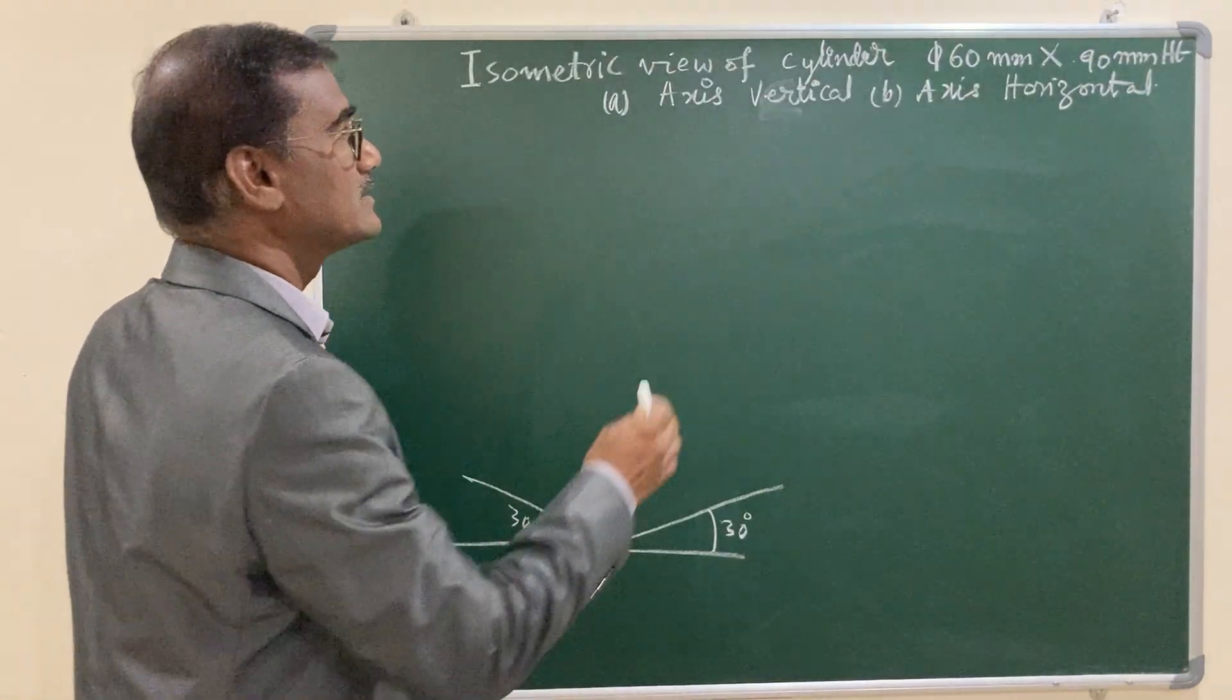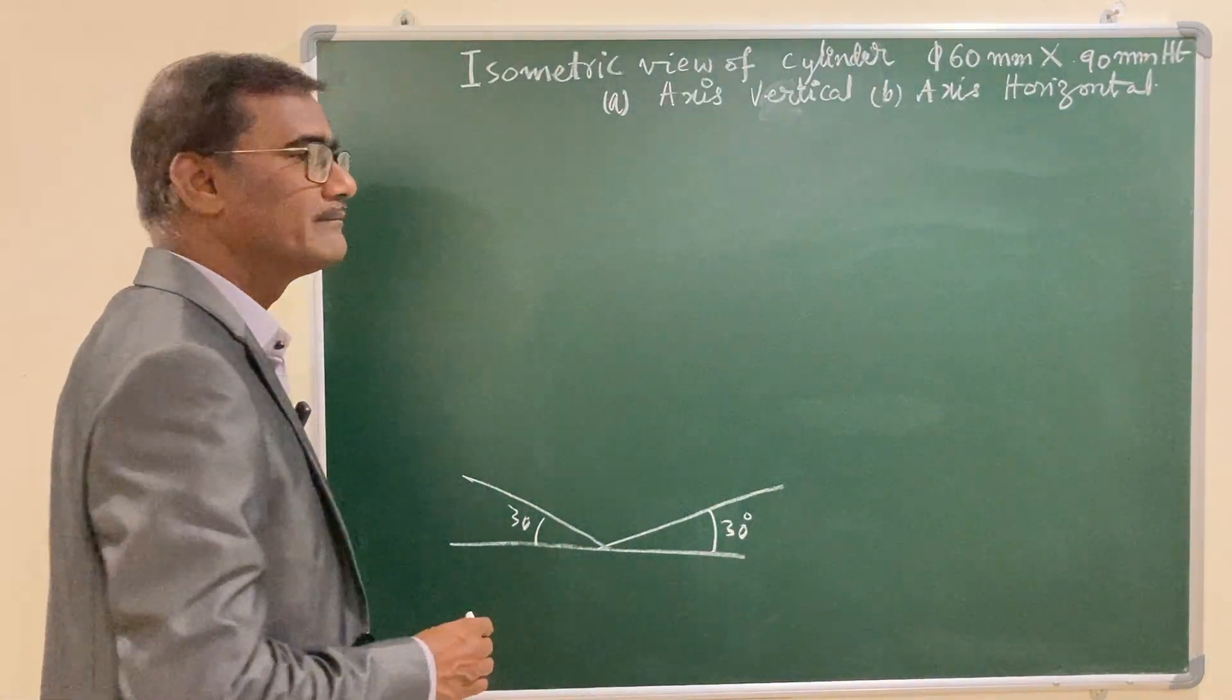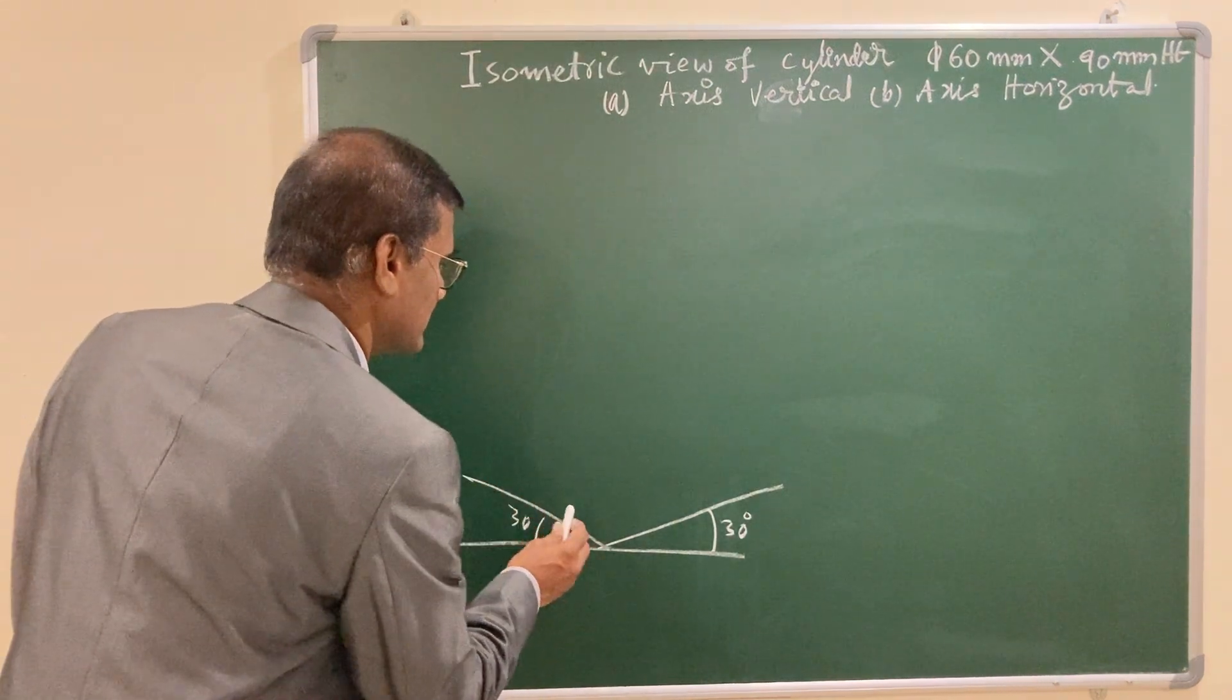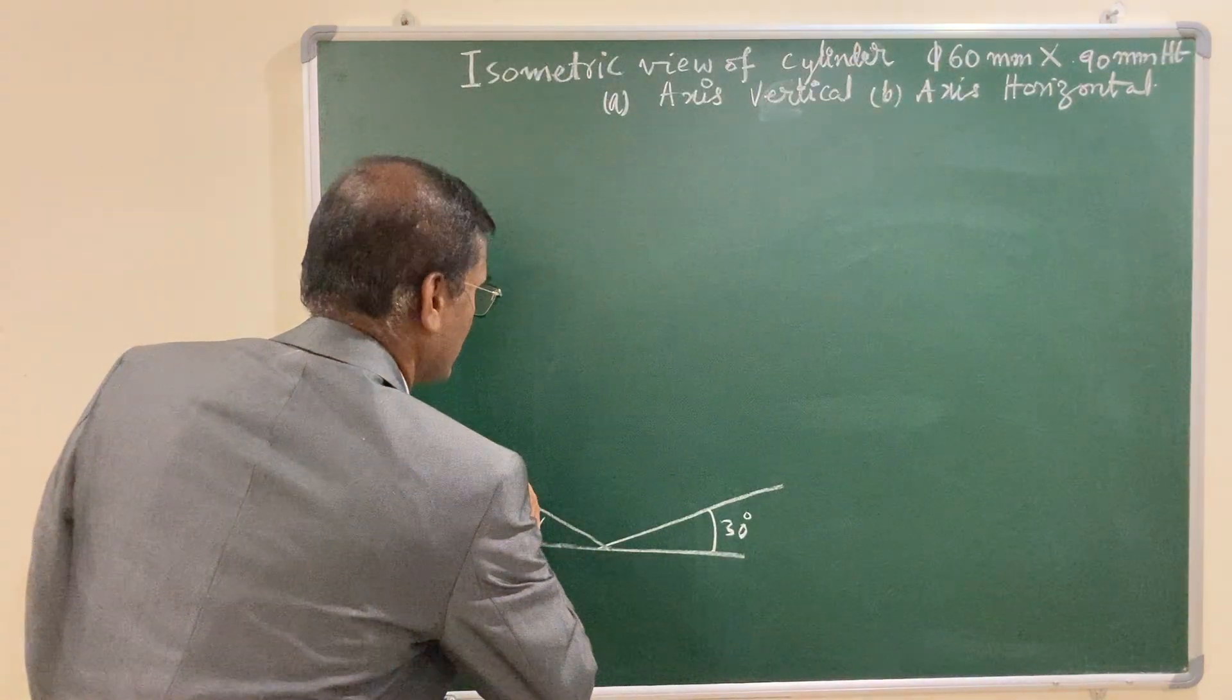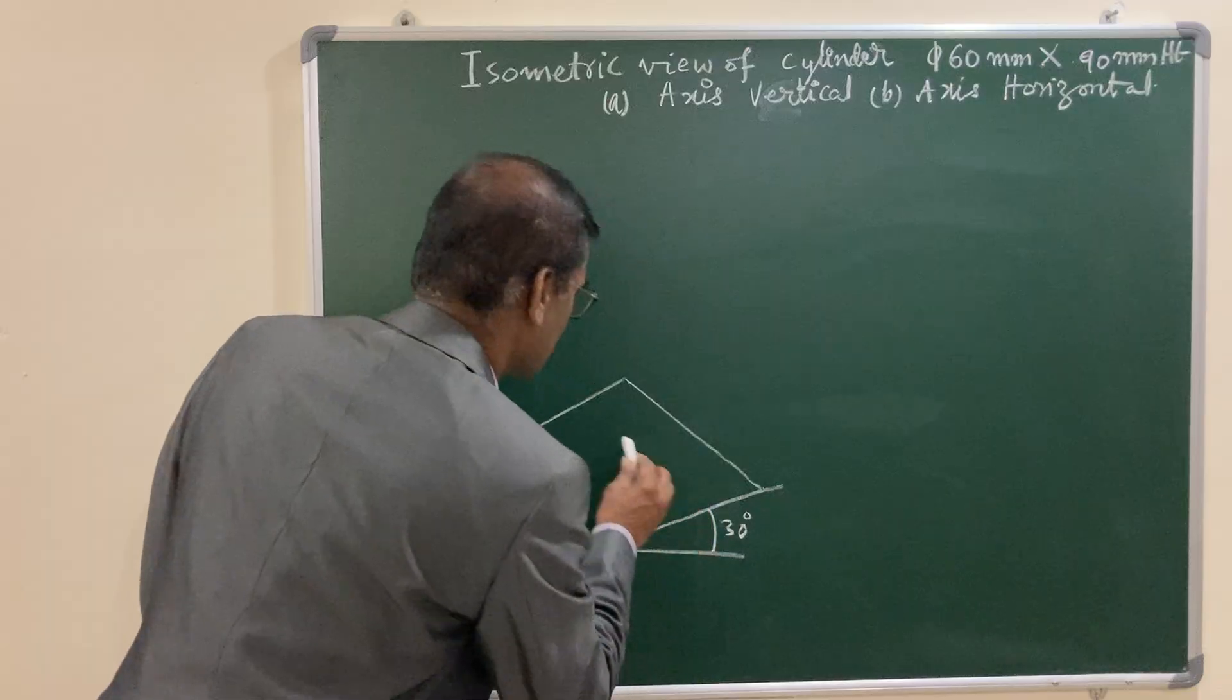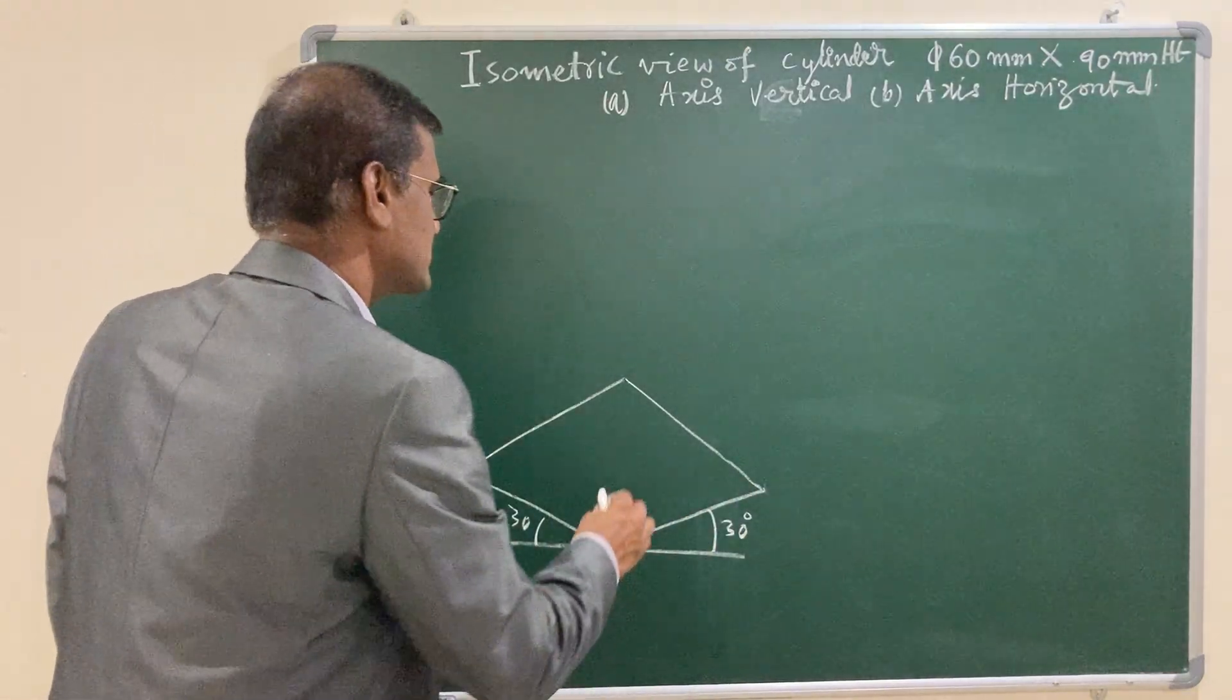Diameter is given as 60 mm. The circle is inscribed in a square and the dimensions will be also 60. The dimensions of the square will be 60 by 60.